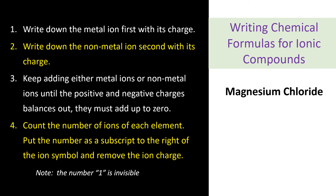Let's write the formula for magnesium chloride. First, write down the metal ion including its charge. So magnesium is Mg, and the charge is 2+. Now write down the non-metal ion with its charge. Chlorine is Cl, and the charge is 1-.